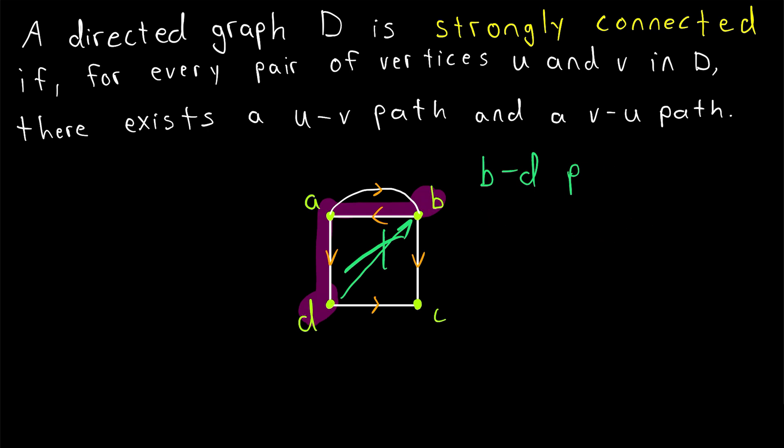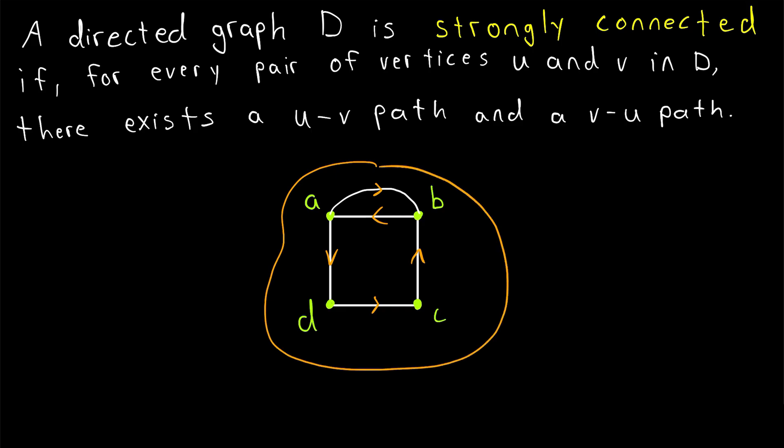However, we could make it strongly connected by just changing the direction on this edge so that it goes from C to B. Now you'll see that we could travel between any pair of vertices in either direction, and that's what makes a directed graph strongly connected. Now you see we can go from D to B, and of course we can still go from B to D.